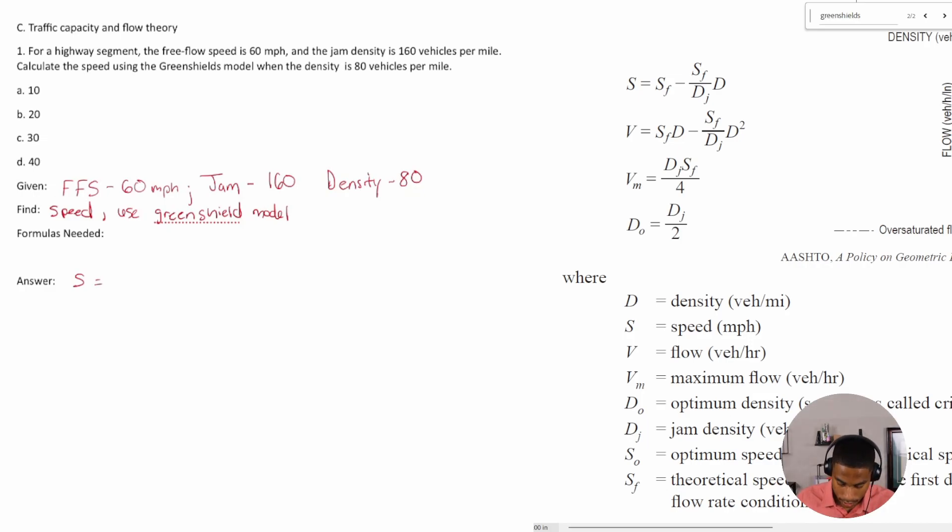So let's go ahead and solve it out. So S is equal to S_f minus S_f over D_j times D. All right, S is equal to 60 minus 60 over 160, I'm just plugging and chugging, times 80.